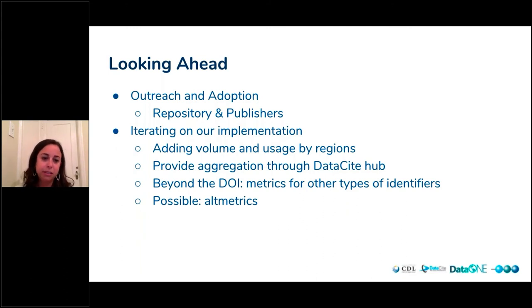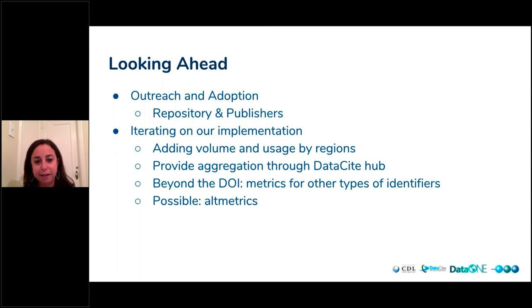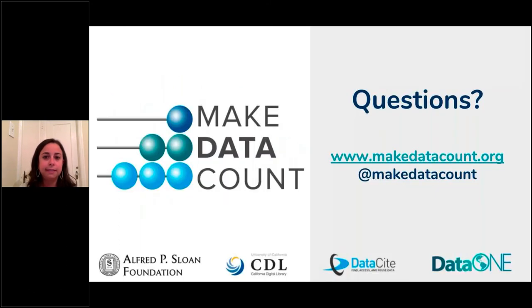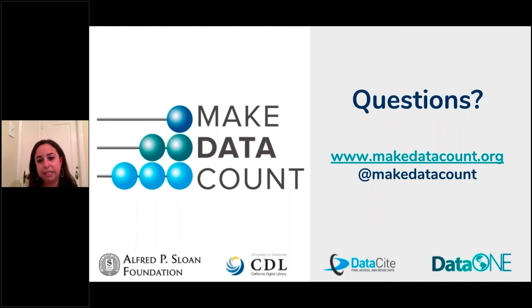In the future, we do need to think about beyond the DOI, because right now this is for DataCite DOIs. We know a lot of research data are not just DOIs — they have accession numbers and handles — and this is on our radar and something we care about as well. Here is the URL for our website; all information is linked from there, including recordings, presentations, our roadmap, and our Twitter as well.